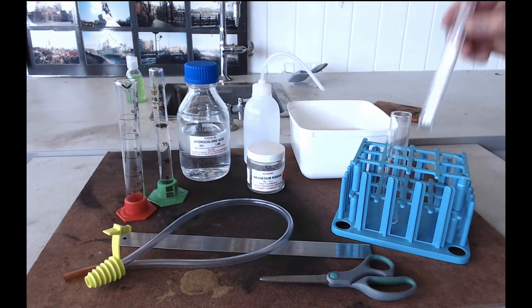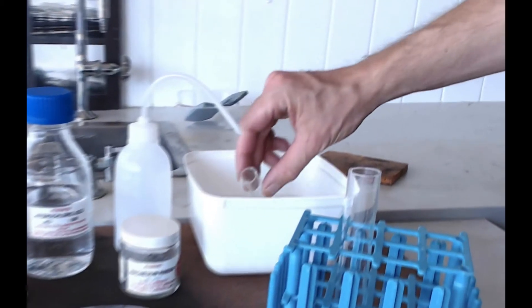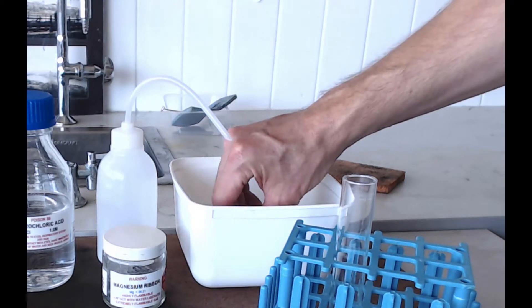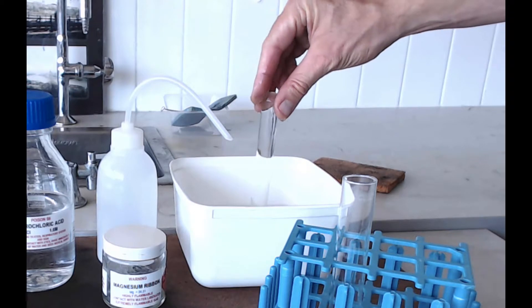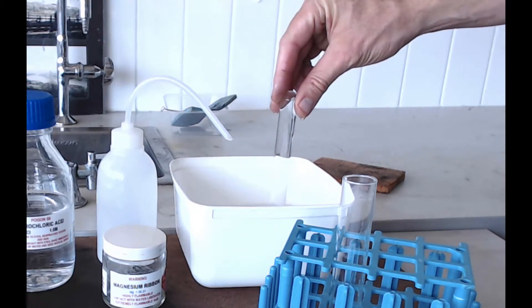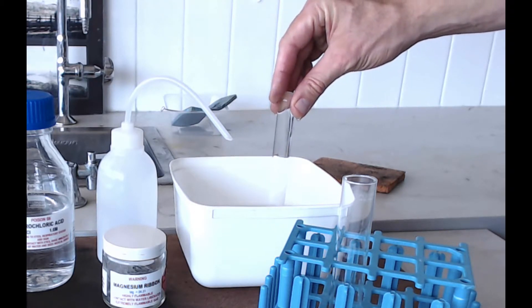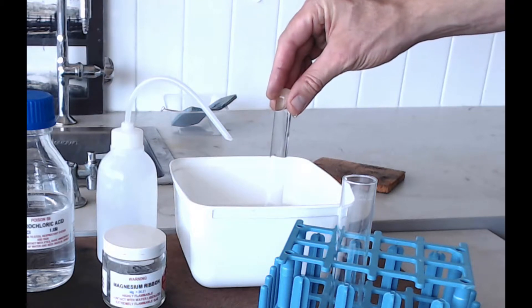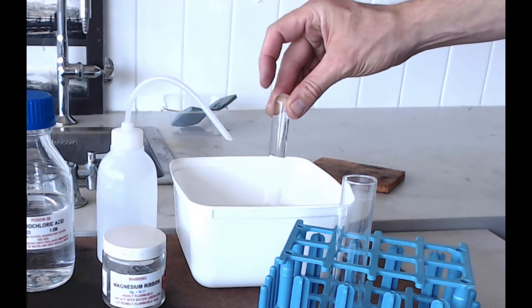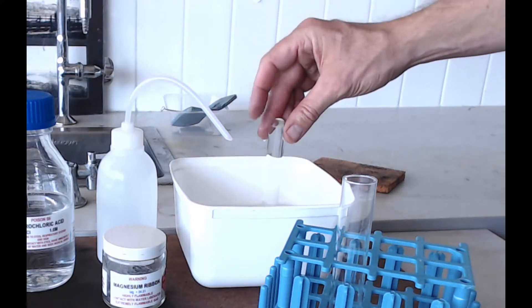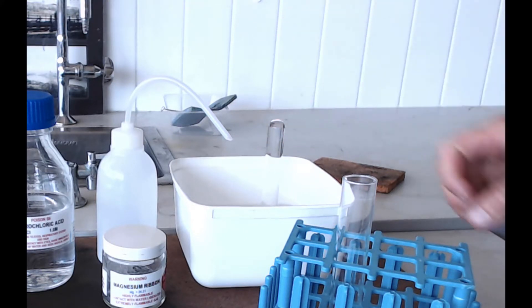Now being ready means that you've got a small test tube that is full of water from this trough, and it's standing upside down in there. So your trough does not need to be full of water, but it needs to be deep enough that you can get your delivery tube under this tube, so that the gas can collect inside it. You can stand it there if you want while you're getting other things ready.